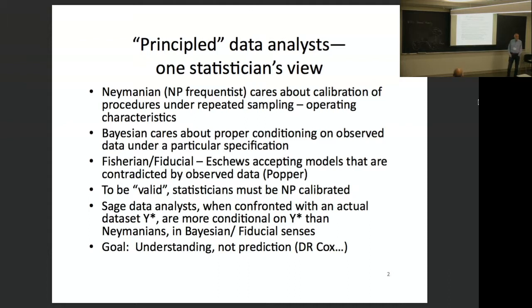This is fiducial — this is Fisher now. Fisher had this idea of fiducial, which no one has made work right. But there's an essential idea there that I think is very important: you avoid, eschew, accepting models that are contradicted by the observed data. It's very consistent with a Popperian view of science. You can't prove any empirical model is right. What you can do is prove things are inconsistent with the data — science begins with the disproving of myths.